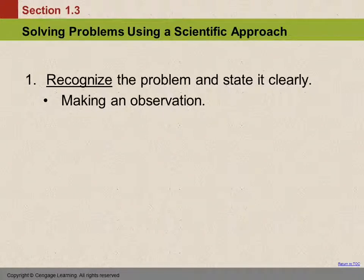So how do we learn how to solve problems? What's the scientific approach? The first thing we need to do is actually recognize what the problem is. It's hard to solve or fix something if you don't know what's wrong. So first we recognize what the problem is and we state it clearly. And this generally involves making some sort of an observation.